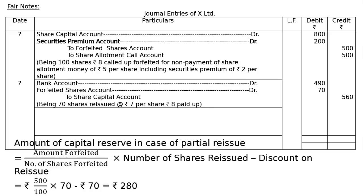The next entry is re-issue. 70 of these shares are re-issued. Bank account debited: 70 into Rs.7 equals Rs.490. Forfeited Shares account debited: Rs.1 discount — share issued at Rs.7, Rs.8 called up — 70 into 1 equals Rs.70. To Share Capital account: 70 into Rs.8 equals Rs.560. Being 70 shares re-issued at the rate of Rs.7 per share, Rs.8 paid up, that is Rs.560.